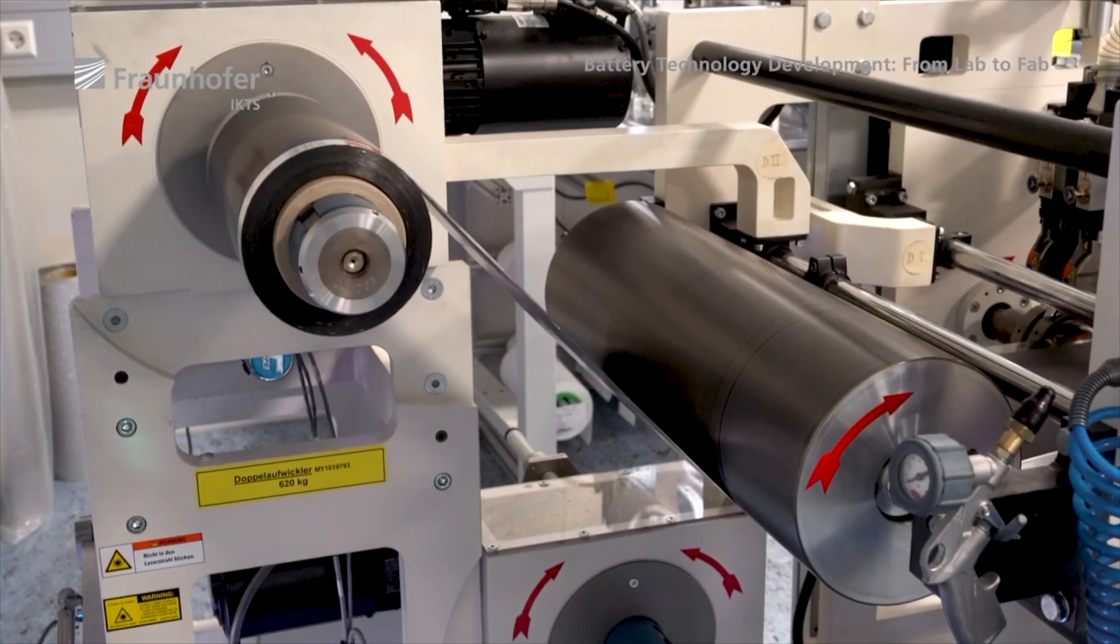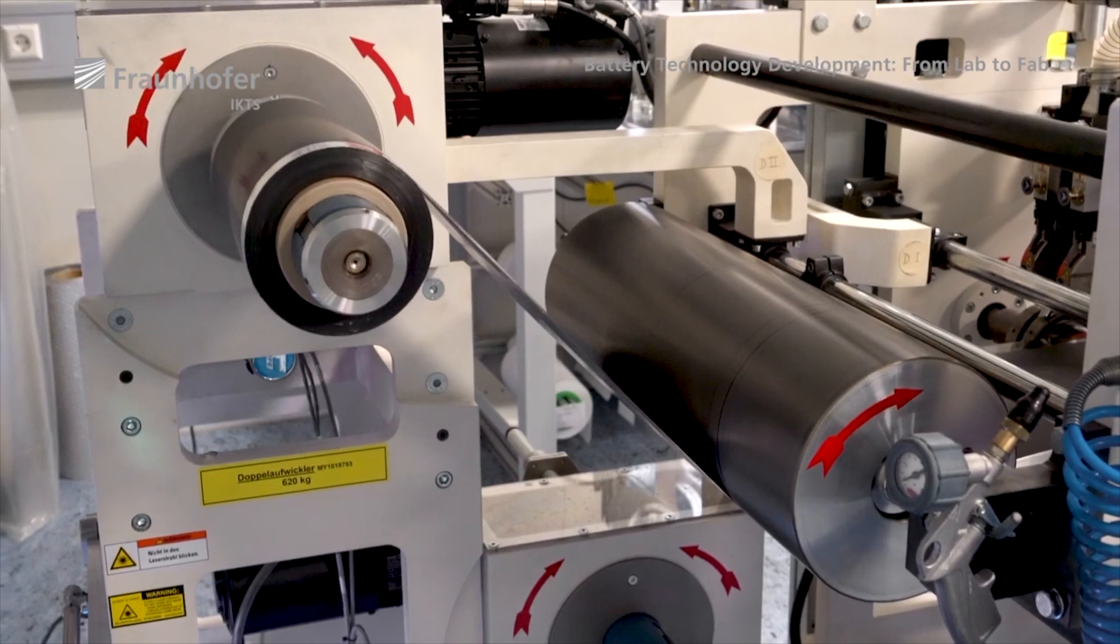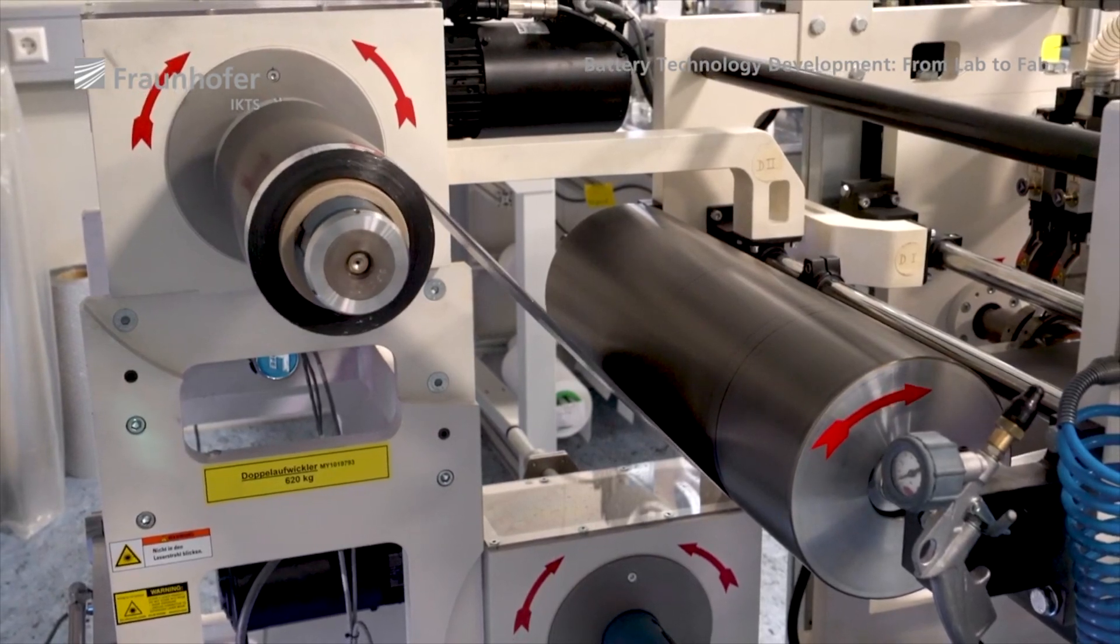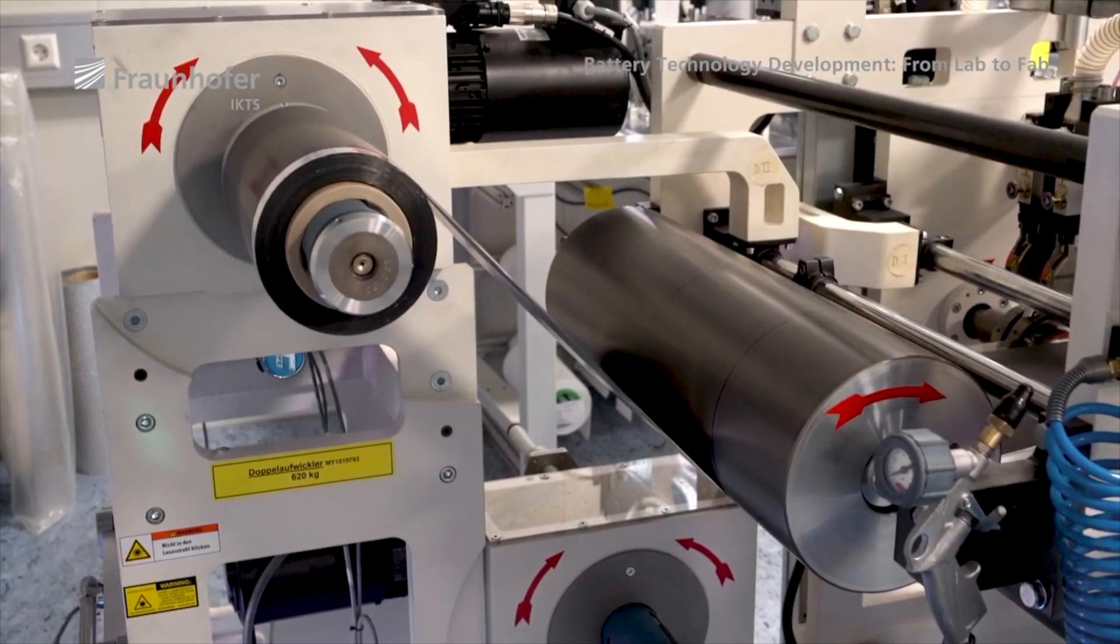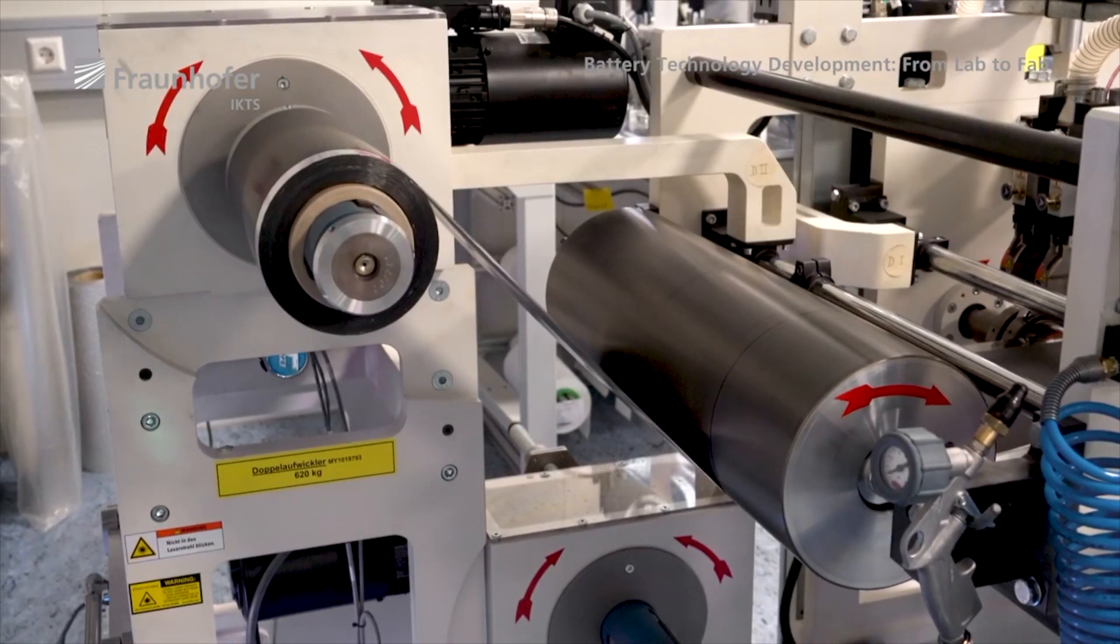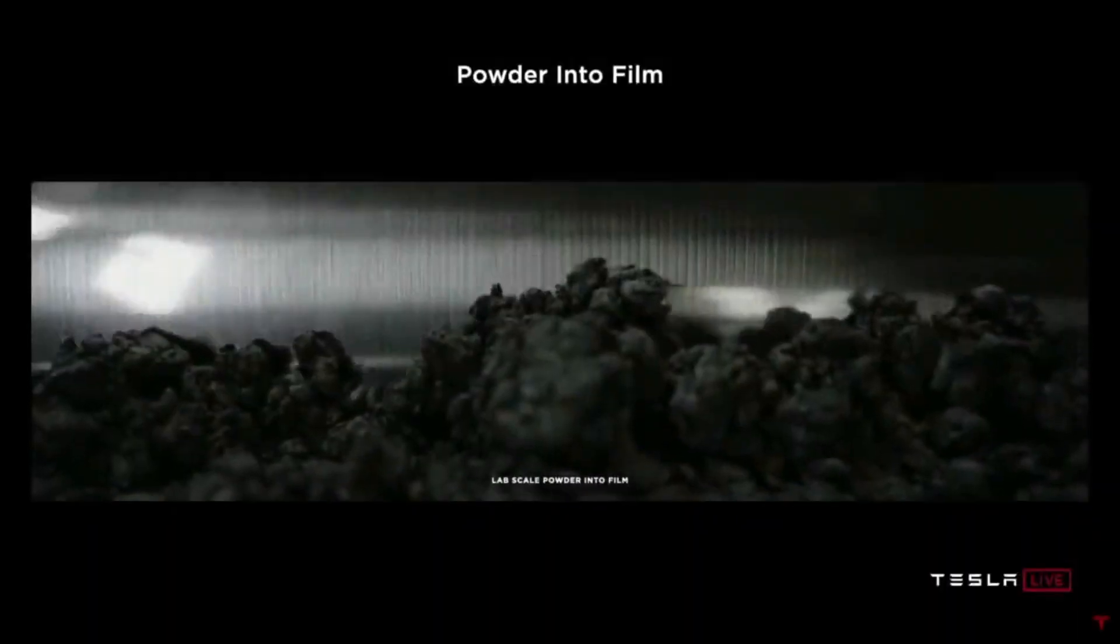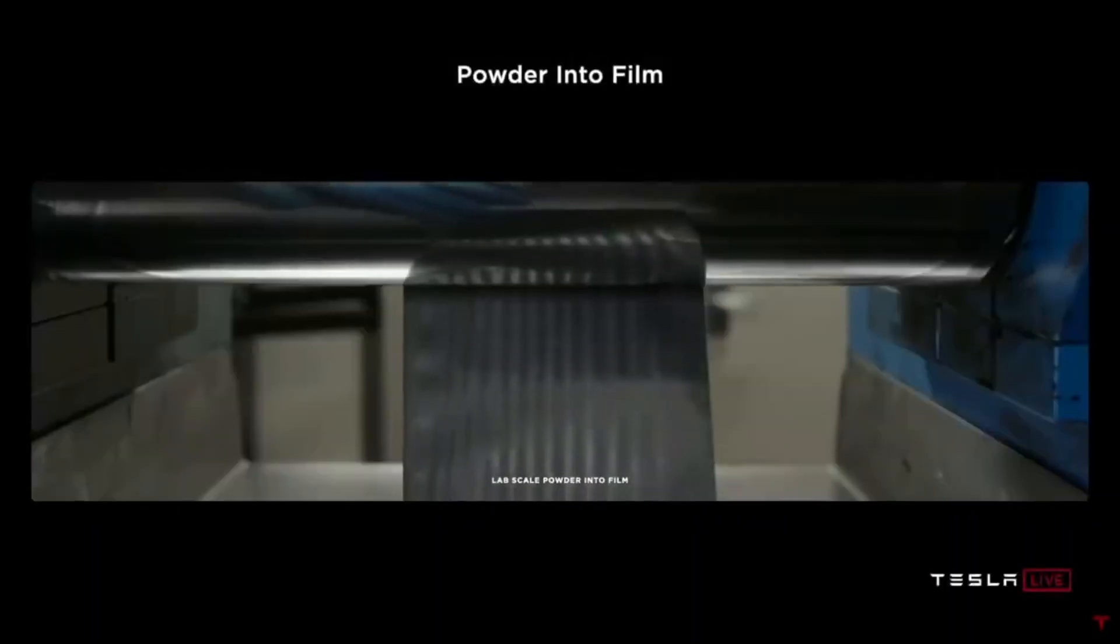The key step after the active material is laid onto the current collector is pressing the material mix onto it with heated rollers. The rollers themselves are heated to a temperature which nearly melts the binder to achieve adhesion of the materials to the current collector.